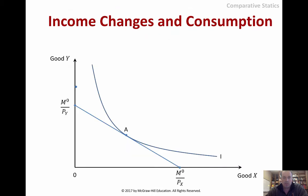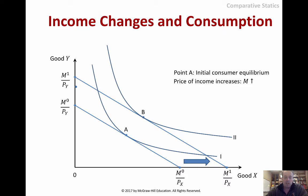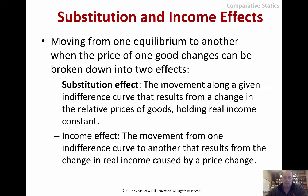With a higher income, normally we'd think that you'd buy more of both goods. But the example might show we buy more of just one, and that would be based on the shape of the indifference curve.